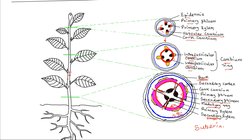Functions of the bark of the stem include: first, it prevents the entry of microorganisms and pathogens; second, it prevents excessive loss of moisture; and third, it protects the stem from physical and mechanical injury.